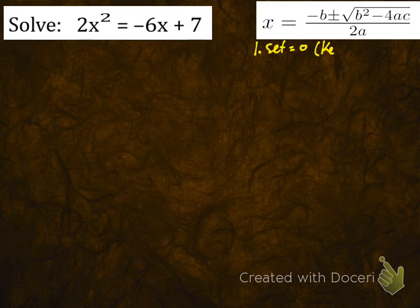First thing we want to do, we want to set it equal to zero. I like to keep the A term positive, just because it helps in so many other contexts.